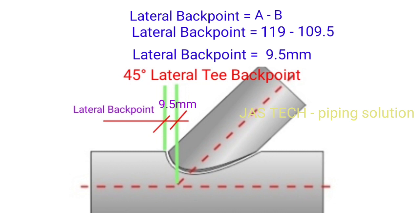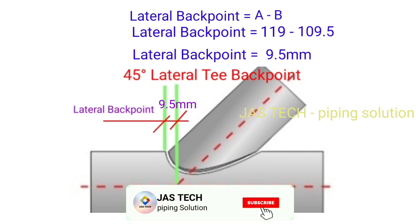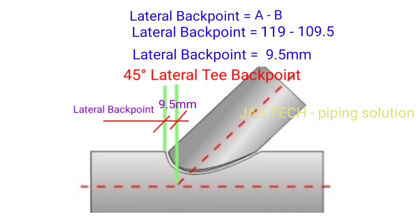Finally we come to our main formula: lateral back point equals A minus B. We know the value of A is 119mm minus B value 109.5mm. So 119 minus 109.5, the answer is 9.5mm. This 9.5mm is the lateral back point value.